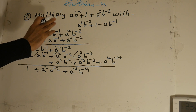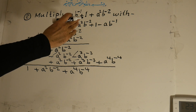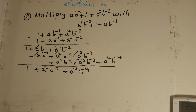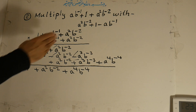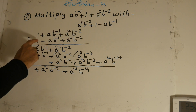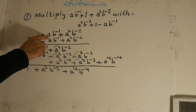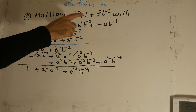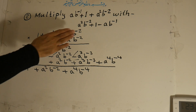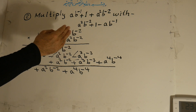I repeat for you: multiply ab to the power of negative 1, plus 1, plus a to the power of 2 b to the power of negative 2, with a to the power of 2 b to the power of negative 2, plus 1, minus a to the power of 1 b to the power of negative 1. Then we arrange the first one according to the powers of a: 1 plus ab to the power of negative 1, plus a to the power of 2 b to the power of negative 2. And the second one: 1 minus ab to the power of negative 1, plus a to the power of 2 b to the power of negative 2.